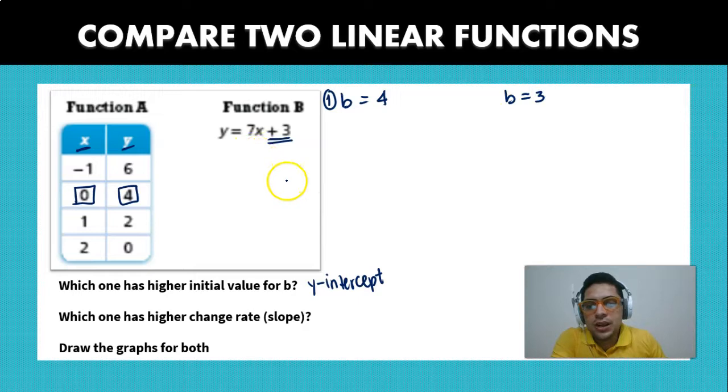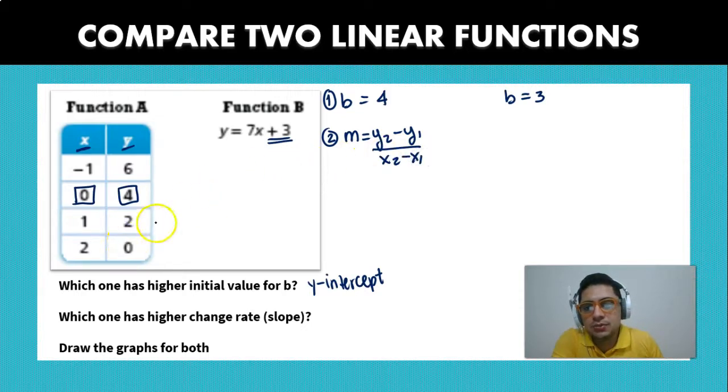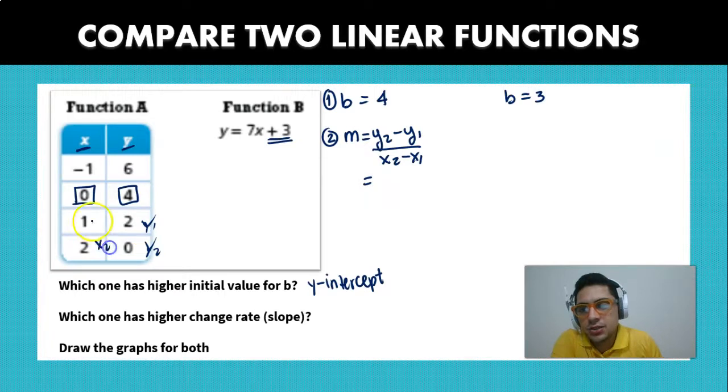Now which one has the higher change rate or the slope? Remember that the slope is going to be y2 minus y1 divided by x2 minus x1. Let's choose these two points for example. So we're going to choose y2 and y1 here and x2 and x1.